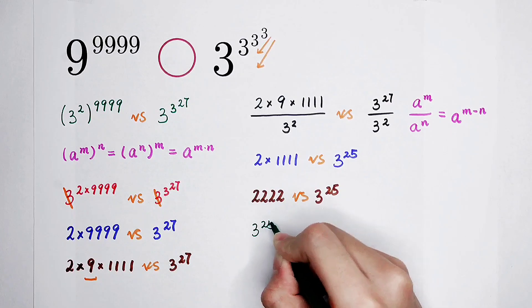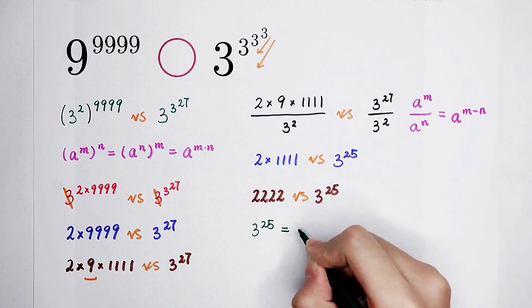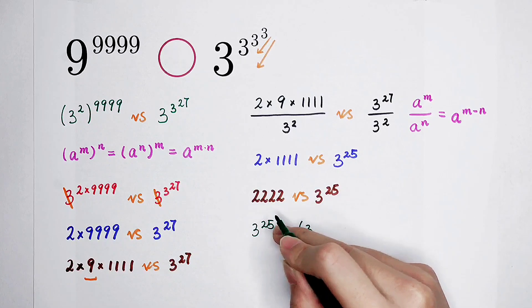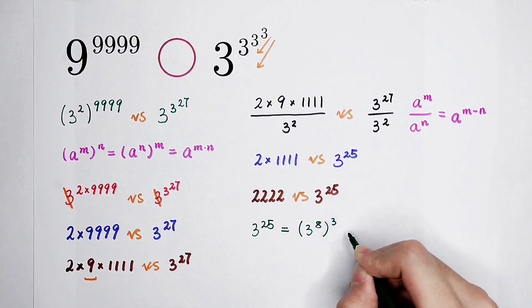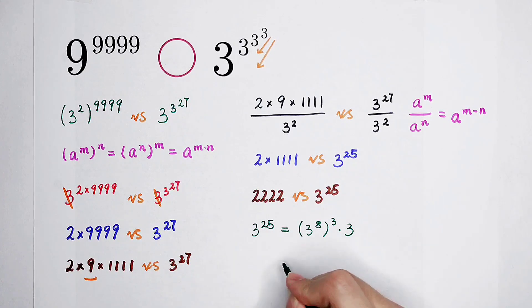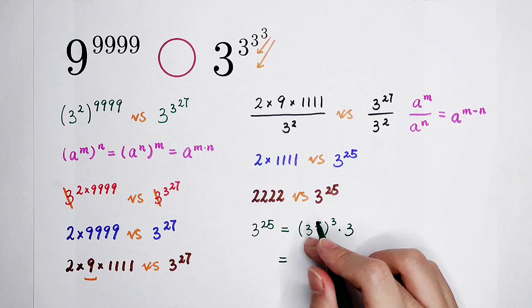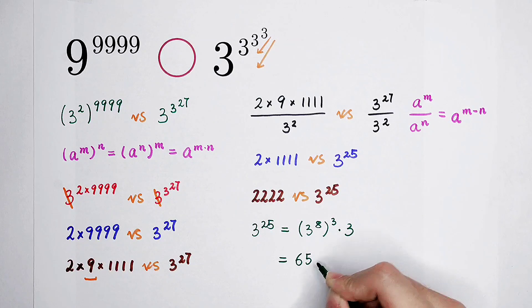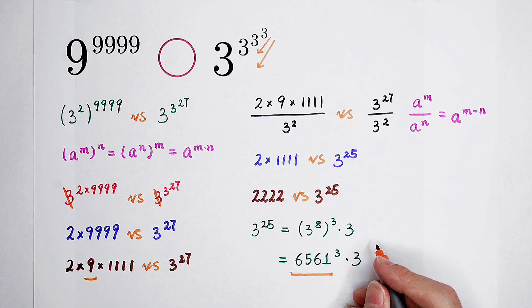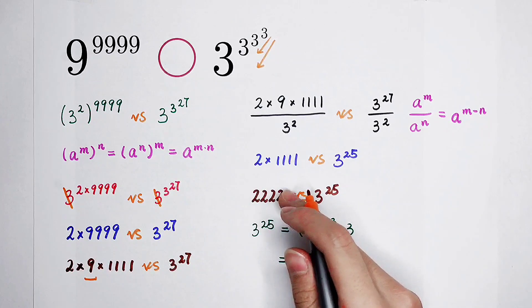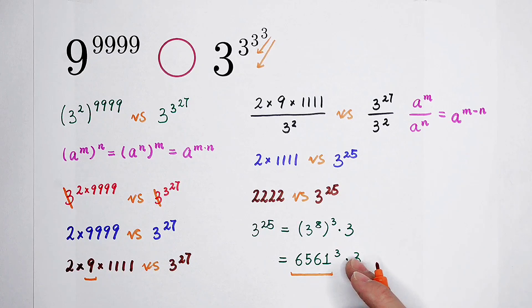3 to the power of 25. We can write it as 3 to the power of 24 then times 3, which is (3 to the power of 8) cubed and then times 3. What's the value of 3 to the power of 8? It is 6561, and then cube times 3. 6561 is much bigger than this number, and it's cubed then times 3, so it's much, much, much bigger than 2222.